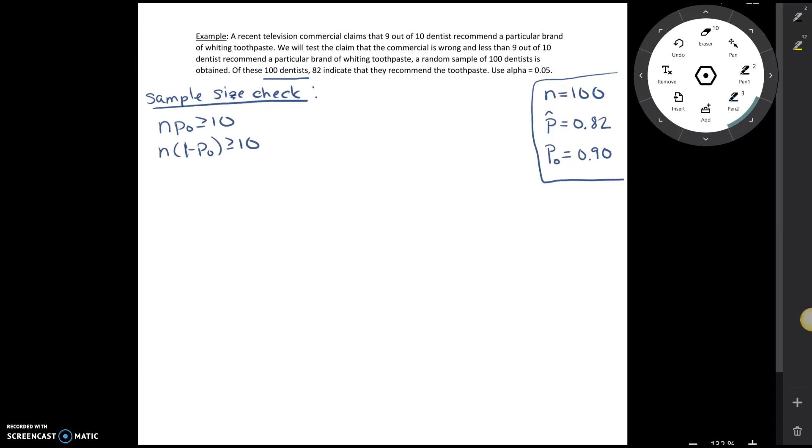So n in this case is 100. So if we take 100 times P naught, so that's 0.90, well, that's going to be equal to 90, and 90 is definitely bigger than or equal to 10. And then if we take 100 again, that's our n times 1 minus our 0.90, that's going to be equal to 10. And 10 is also bigger than or equal to 10. So we have satisfied the requirements.